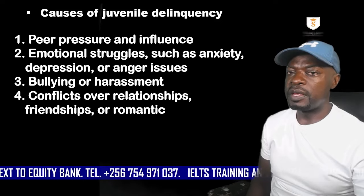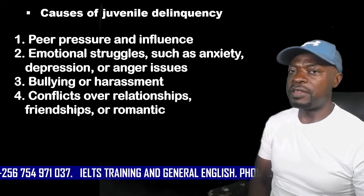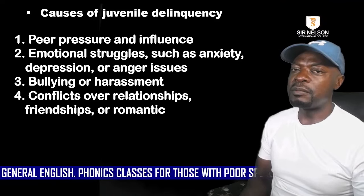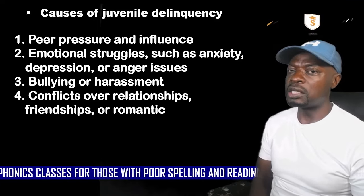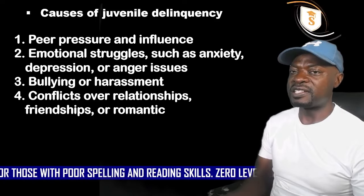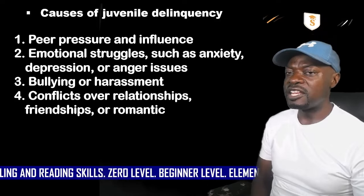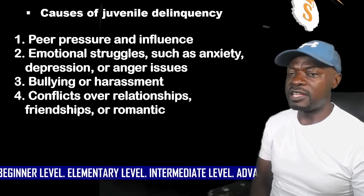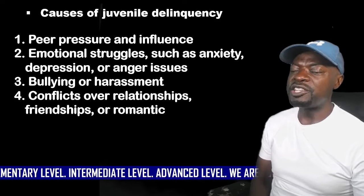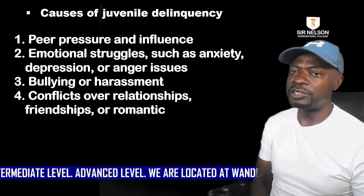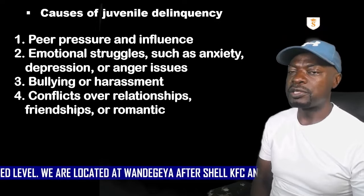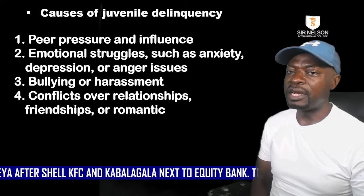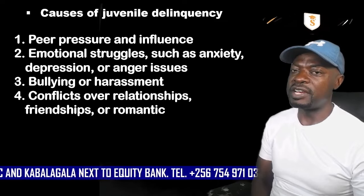What are the causes of juvenile delinquency? Some of the causes include peer pressure and influence — peer means friends' influence. Emotional struggles such as anxiety, depression, and anger issues: teenagers or juveniles have a problem managing their anger and emotions because they are in the process of growing up. Bullying or harassment also causes juvenile delinquency, sometimes as a trigger for self-defense.